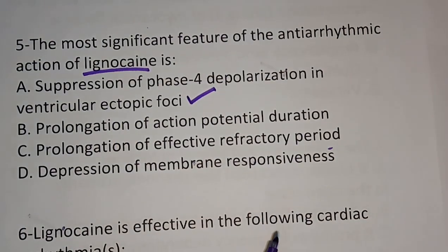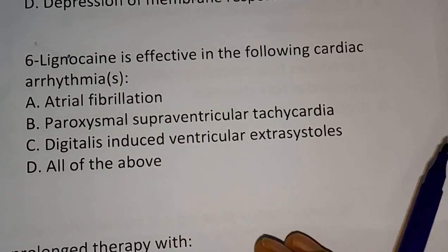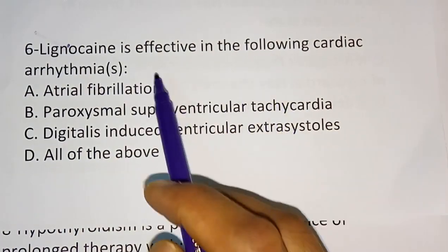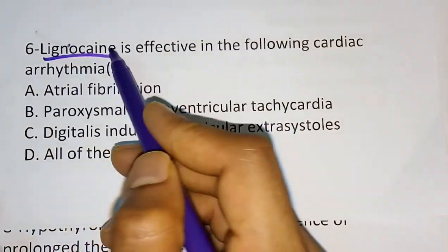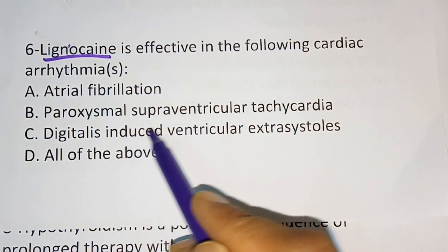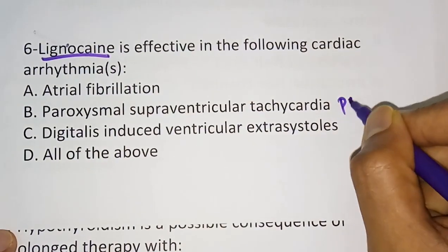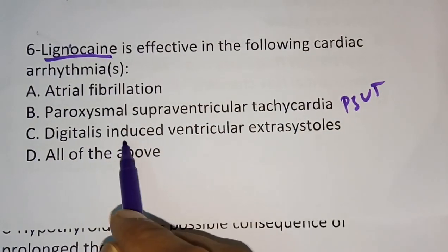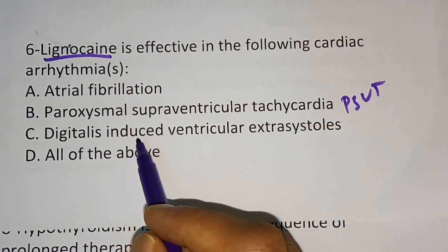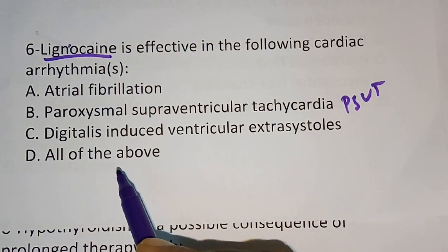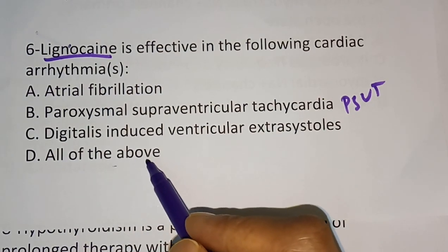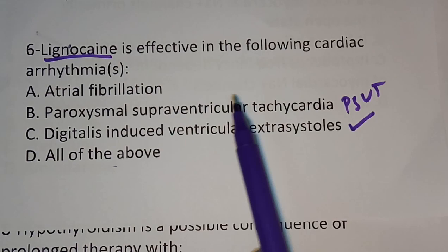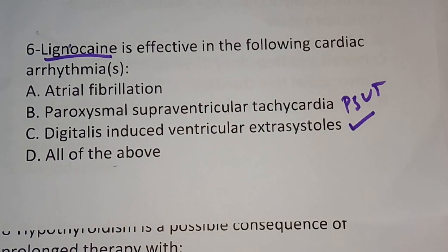Question 6: Lignocaine is effective in which of the following cardiac arrhythmias? Options are: atrial fibrillation, paroxysmal supraventricular tachycardia (PSVT), digitalis-induced ventricular extrasystole, and all of the above. The correct answer is option C — digitalis-induced ventricular arrhythmias. Lignocaine has action against arrhythmias induced by digitalis, which we already discussed in the cardiac arrhythmias chapter.